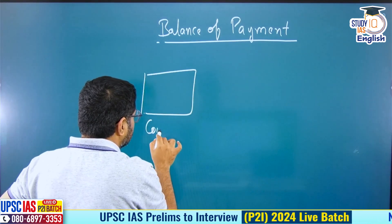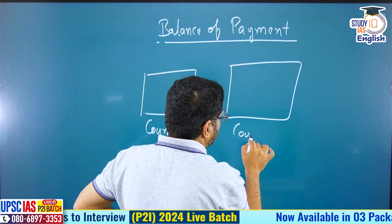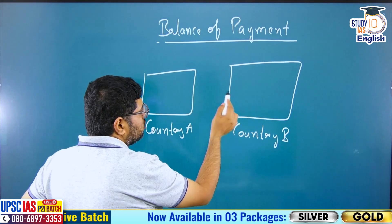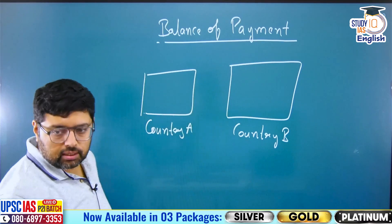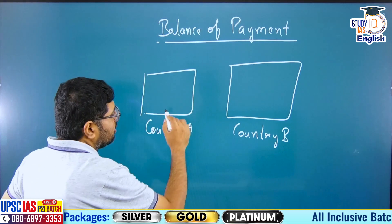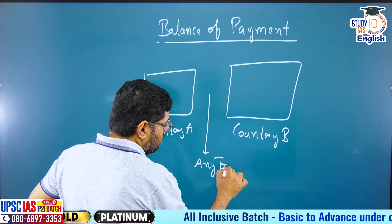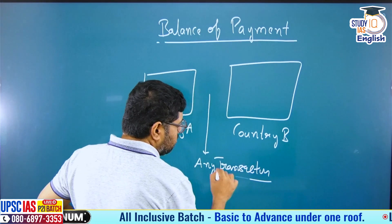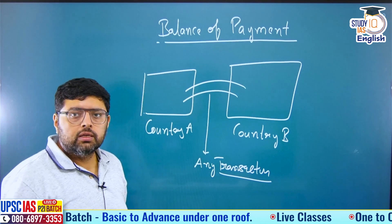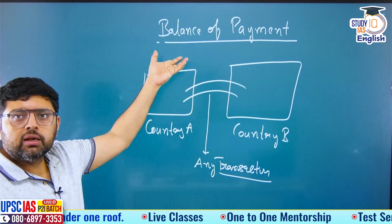Suppose this is country A and this is country B. When we talk about country A and country B, these countries are dealing with each other. Dealing with each other means there is a transaction. Whenever there is any transaction between these countries, there is a flow of foreign currency — one country is getting foreign currency and from one it is going out. So these transactions we have to record under balance of payment.